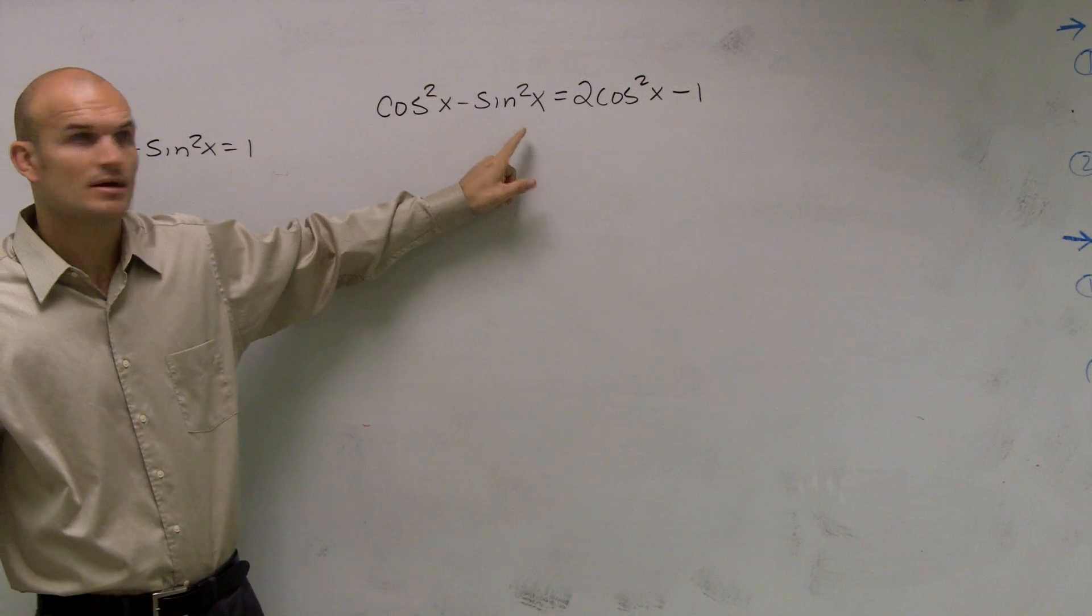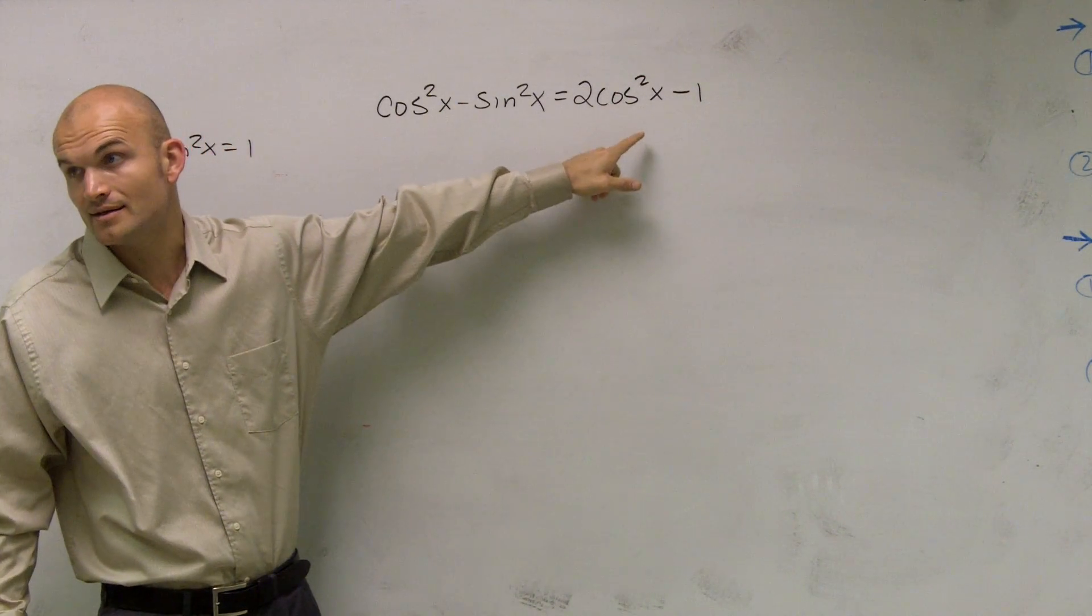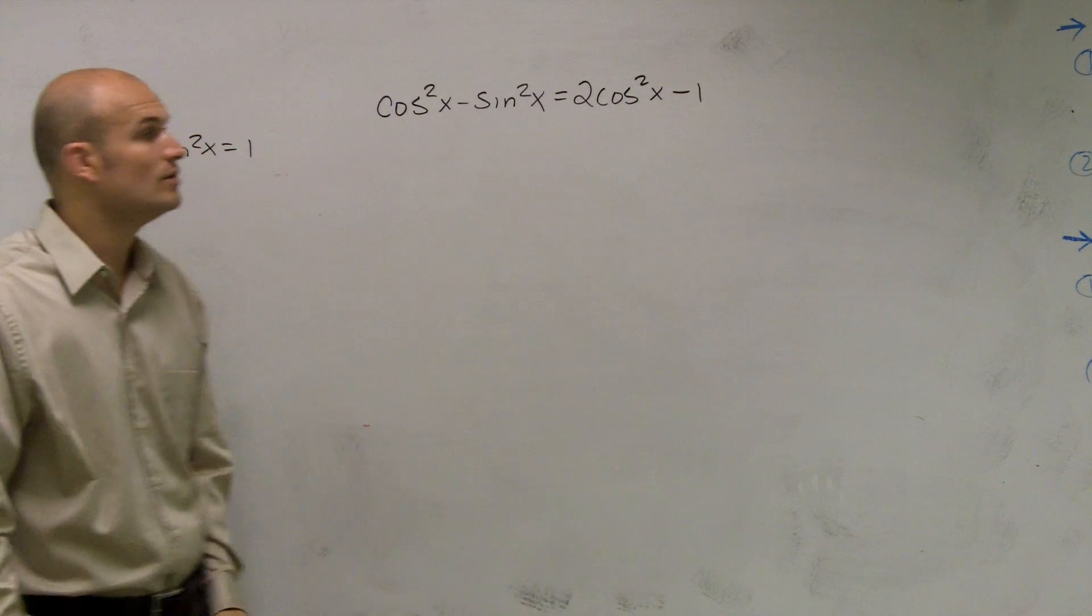That make sense? If I wanted to make this side look like the right side, the right side doesn't have a sine. So that means I'd have to convert it to a cosine.